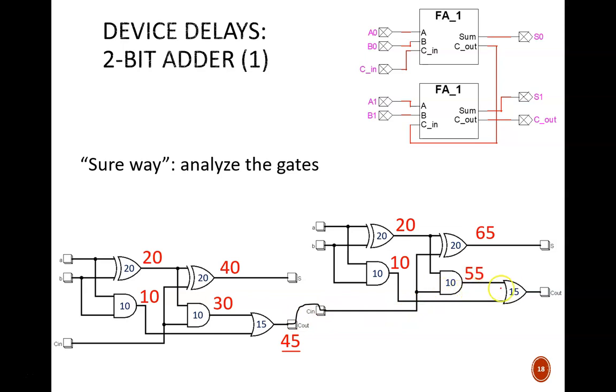Finally, this OR gate's largest input delay is 55. Add that to 15 and we get 70 nanoseconds. The overall delay of this 2-bit adder is the largest output delay, which is 70 nanoseconds.